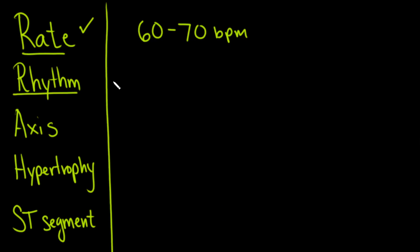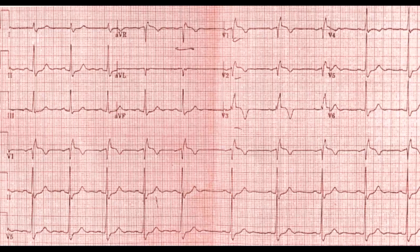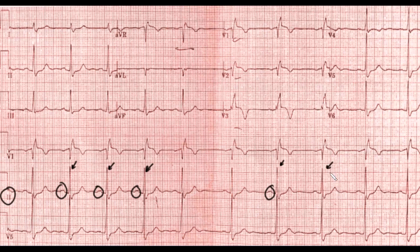Next, let's go on to rhythm. The best lead to look for rhythm is lead II, which is the rhythm strip. We're going to look for each QRS complex and see if there are P waves before each one. We can clearly see P waves before each QRS complex. There is this little extra beat here — that's probably a U wave, sometimes associated with low potassium. But clearly, we see P waves before each QRS complex, so we're going to call this sinus rhythm.